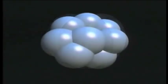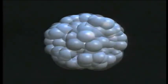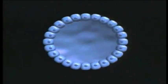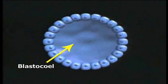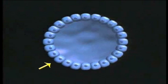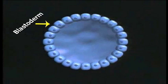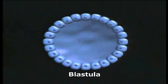Blastula: in the majority of animals, as cleavage continues, a cavity develops among the blastomeres. This cavity is known as the blastocoel, which is filled with a fluid known as blastocoel jelly. The blastomeres are arranged in one or more layers around this cavity; these layers are known as the blastoderm. This stage of the embryo is known as the blastula, and the process of its development is called blastulation.